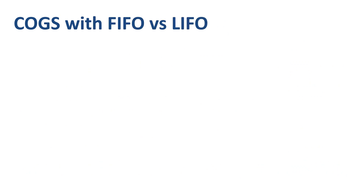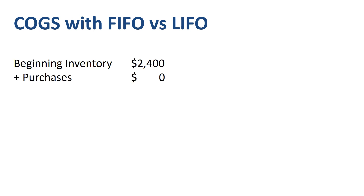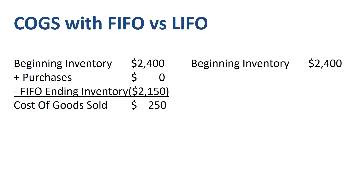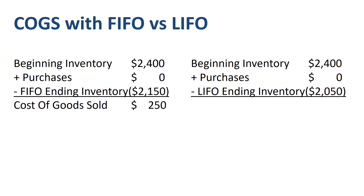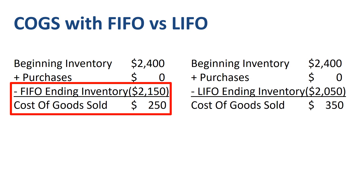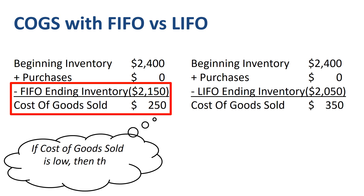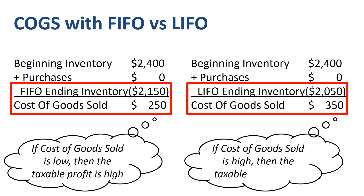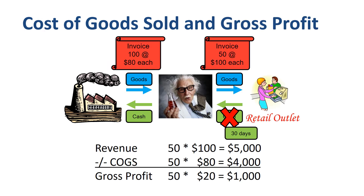We can put the COGS formula side by side for FIFO and LIFO. Under FIFO: beginning inventory $2400, plus purchases of $0, minus ending inventory of $2150, equals COGS of $250. Under LIFO: beginning inventory $2400, plus purchases of $0, minus ending inventory of $2050, equals COGS of $350. The higher the ending inventory, the lower the cost of goods sold, and the higher the taxable profit. The lower the ending inventory value, the higher the cost of goods sold, and the lower the taxable profit.